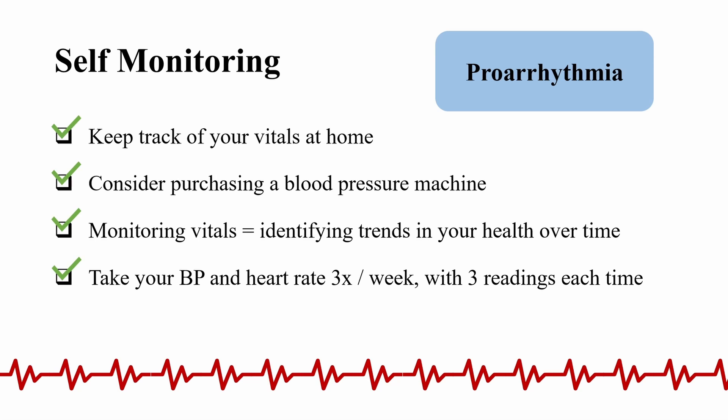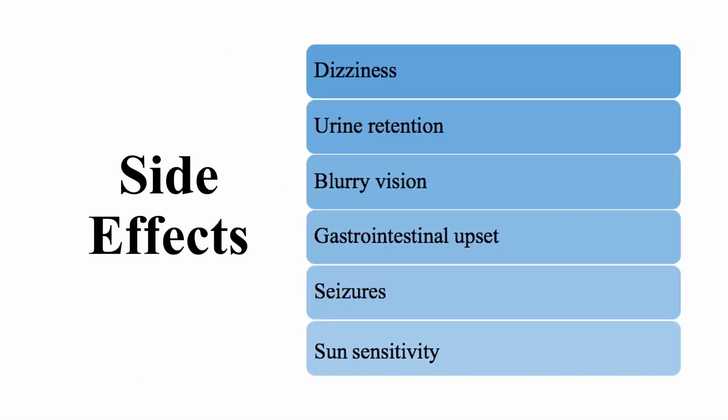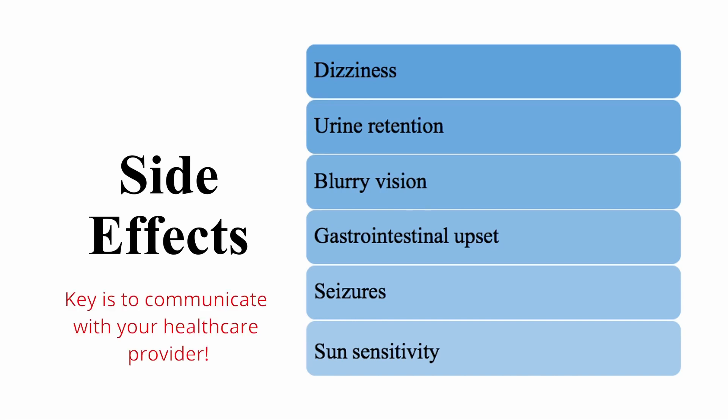Some other less common side effects may include dizziness, blurry vision, seizures, urine retention, gastrointestinal issues and discomfort, and sun sensitivity. It is important to identify any symptoms you may be experiencing and report them to your doctor. Don't be afraid to keep in contact with your doctor so that the two of you can work together to assess whether your medications are working as intended. Also, discuss with your doctor to make sure that no other medication you are taking interferes with the proper functioning of your antiarrhythmic medications.